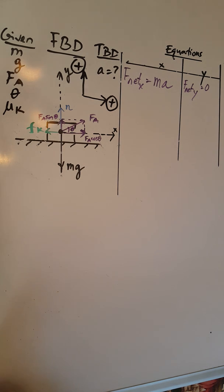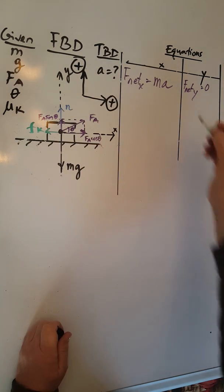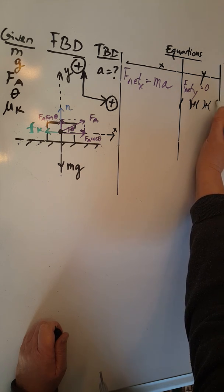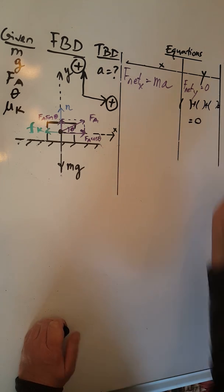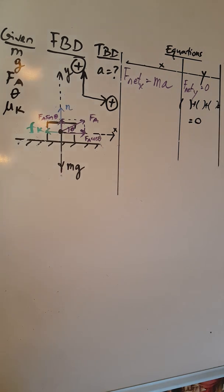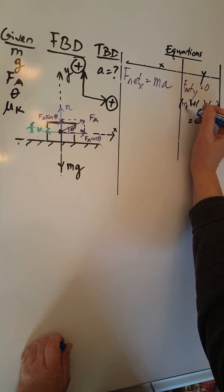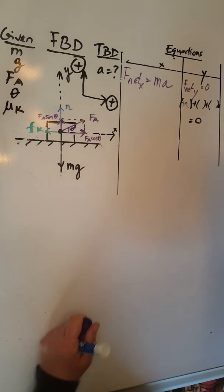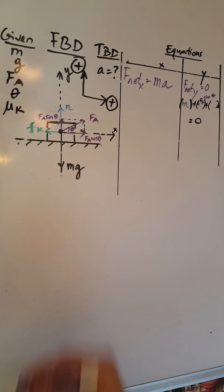So for F net Y we have one, two, three forces. Add them together: one plus two plus three, and that's going to give me zero. What are those three forces? I have a positive normal force, N. I have a positive FA sine theta. And I have a negative Mg.